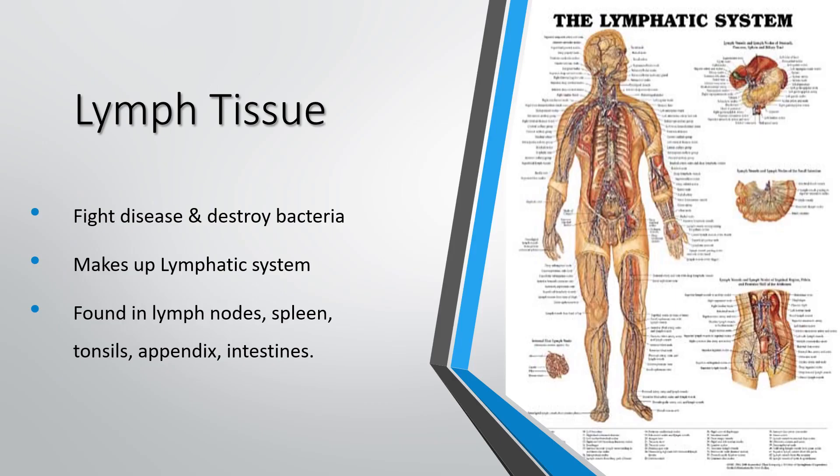Lymph tissue is also a connective tissue. The lymph system is all about fighting disease and destroying bacteria. Lymph tissue makes up the lymphatic system and is found in the lymph nodes, the spleen, the tonsils, the appendix, and the intestines. A common exam question asks what is made of lymph tissue — the tonsils, the appendix, and the spleen are key answers.